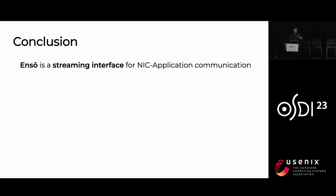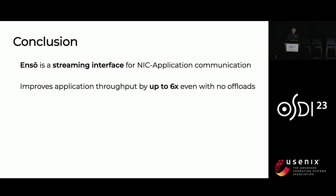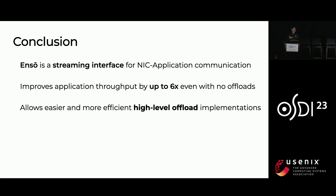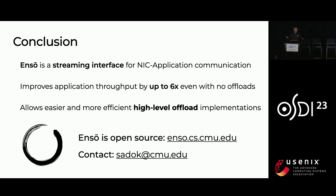To conclude, I introduced ANSO, which is a streaming interface for NIC application communication. I showed that ANSO can improve application throughput by up to six times, even with no offloads on the NIC — purely by changing the interface. Because ANSO allows easier and more efficient high-level offloads, we're excited to see how people will use ANSO for different kinds of offloads and applications. We made ANSO open source, and you can access both the source code as well as comprehensive documentation at the link shown. Thank you.